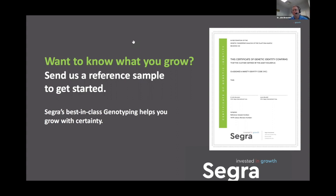On a related note, related to throughput — how many tests have we processed to date? Around 2,700 with the current version of the assay. Before that we had some earlier developmental versions, so probably around 3,000 total. That's a mix of customer samples and internal validation and QA.